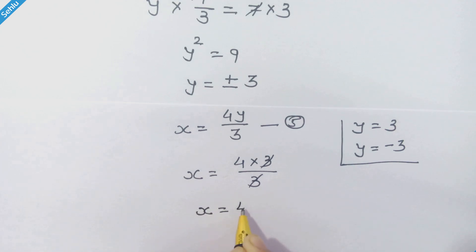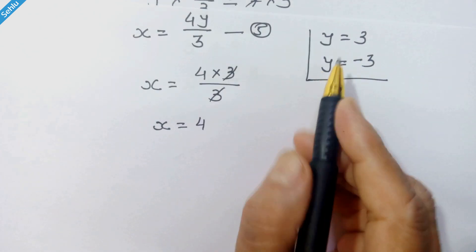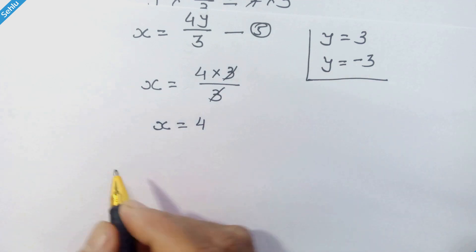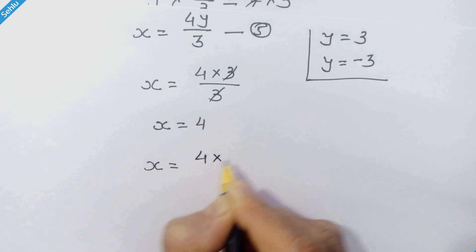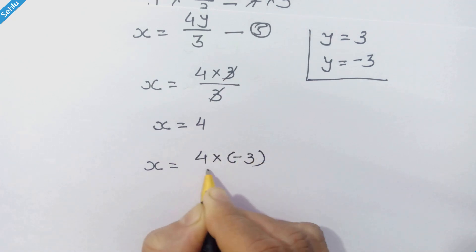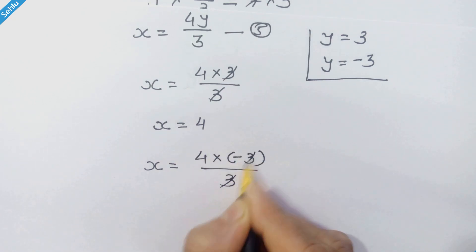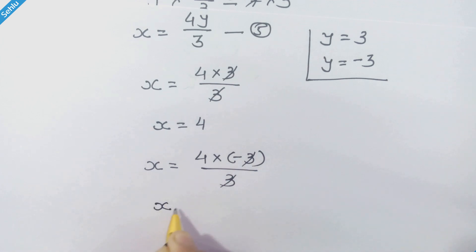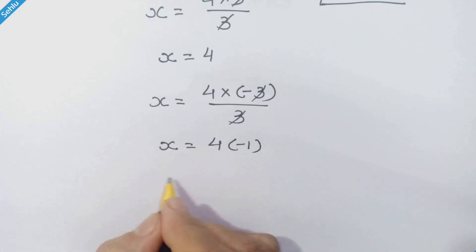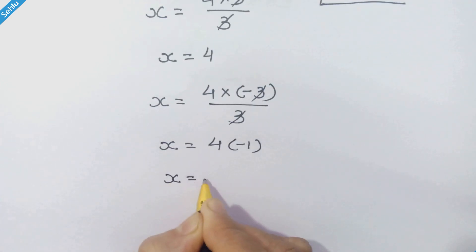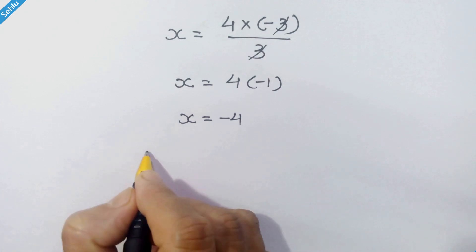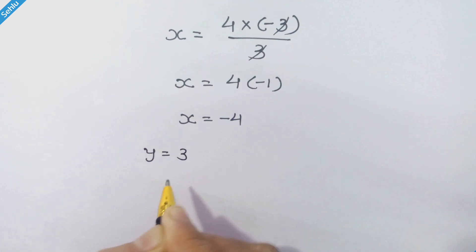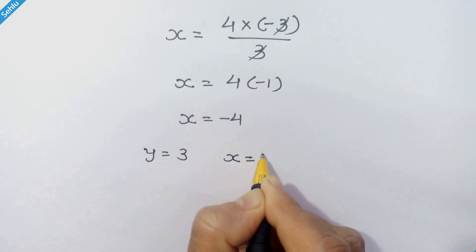By using y equal to minus 3, x is equal to 4 times minus 3 upon 3 — the 3s cancel out — so we have x equal to 4 times minus 1, giving x equal to minus 4.